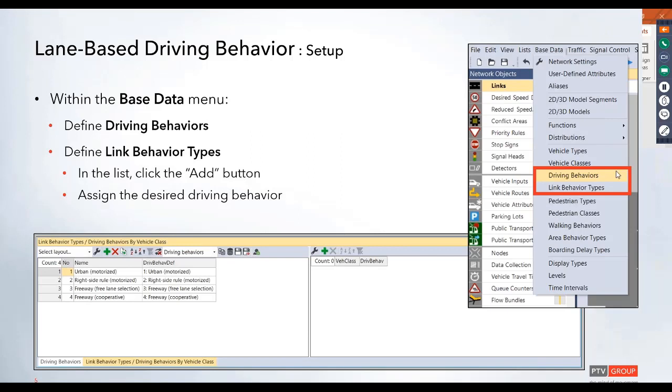These driving behaviors then get applied to a link behavior type. This can be found under that base data menu. Within the link behavior types, this is where you can add additional ones.